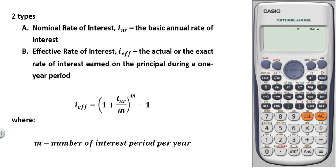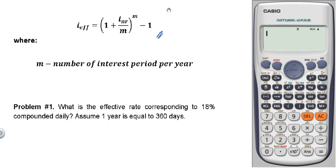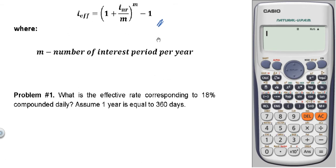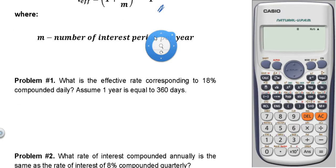Nominal rate is the basic annual rate of interest. Effective rate is the actual or exact rate of interest earned on a principal during a one-year period. To compute for the effective rate, memorize this formula: I effective equals the quantity 1 plus the nominal rate over M, the number of interest periods per year, raised to M, minus 1.